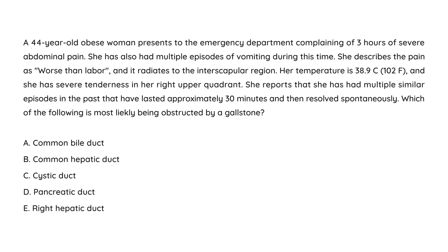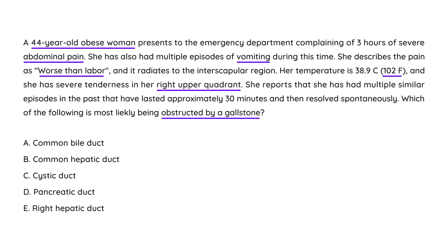Clinical vignette: A 44-year-old obese woman presents to the emergency department with three hours of severe abdominal pain and multiple episodes of vomiting. The pain is worse than labor and radiates to the interscapular region. Temperature is 102°F, with severe right upper quadrant tenderness. She has had similar episodes in the past lasting about 30 minutes that resolved spontaneously.